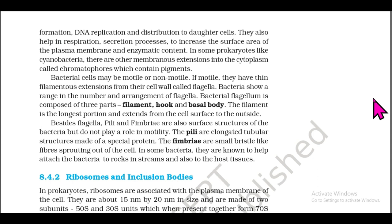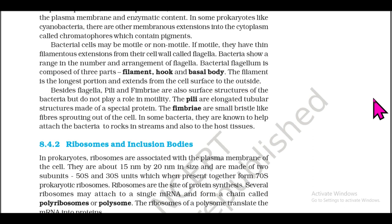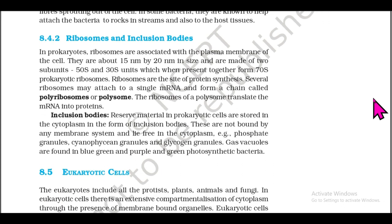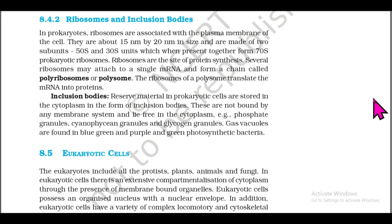The filament is the longest portion and extends from the cell surface to the outside. Besides flagella, pili and fimbriae are also surface structures of bacteria but do not play a role in motility. The pili are elongated tubular structures made of a special protein. The fimbriae are small bristle-like fibers sprouting out of the cell; in some bacteria they are known to help attach the bacteria to rocks in streams and also to host tissues.